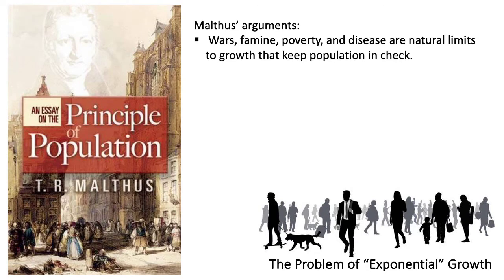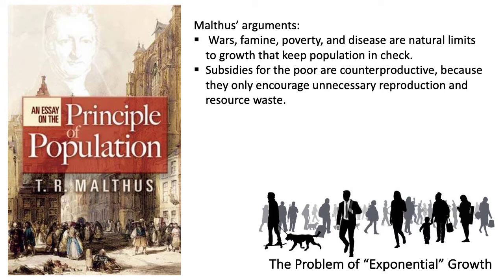In his key written work titled An Essay on the Principle of Population, which he first published in 1798, Malthus suggested that wars, famine, poverty, and disease are natural limits to growth that keep population in check. He also claimed that policies promoting the welfare of the poor are counterproductive because they only encourage unnecessary reproduction and resource waste. He argued that the key to preventing resource crisis is a moral code of self-restraint. Malthus recognized that the poorest people were the most vulnerable parts of the population. He also insisted that efforts to sustain, protect, or subsidize the conditions of the poor were largely pointless because, according to him, it just encouraged population growth.